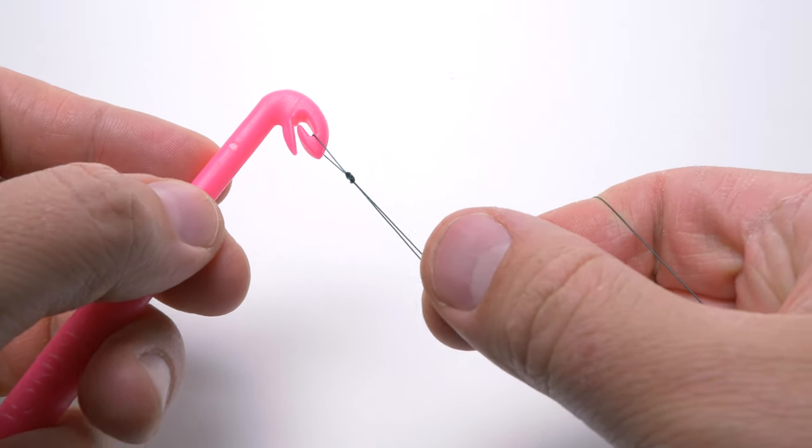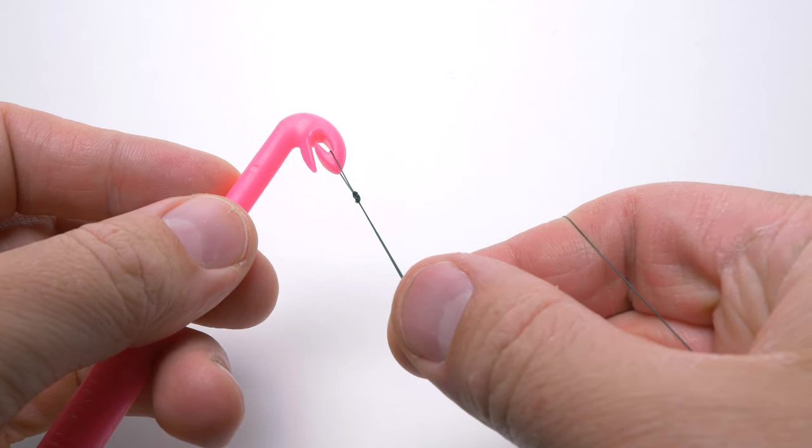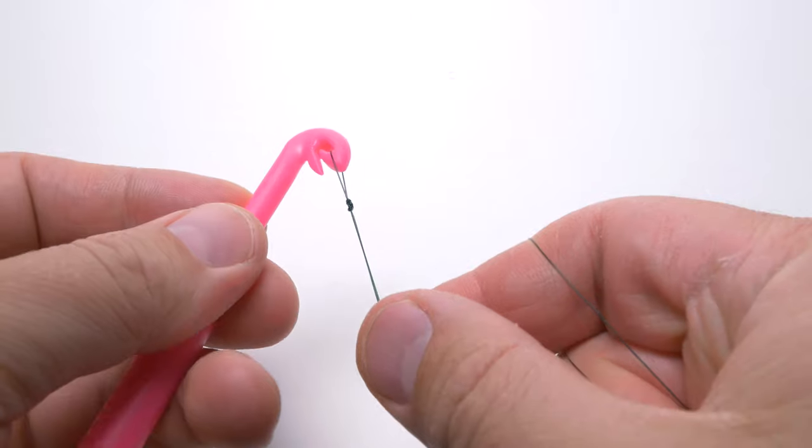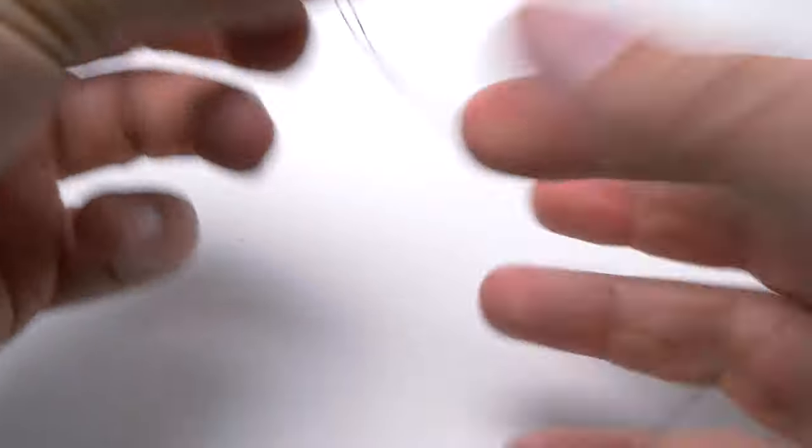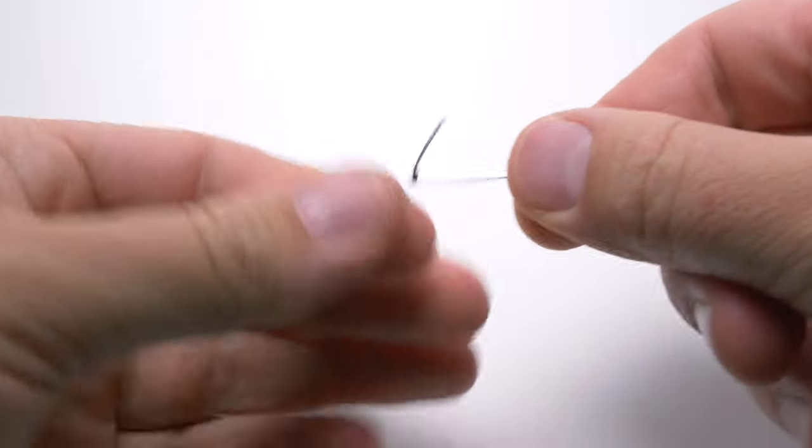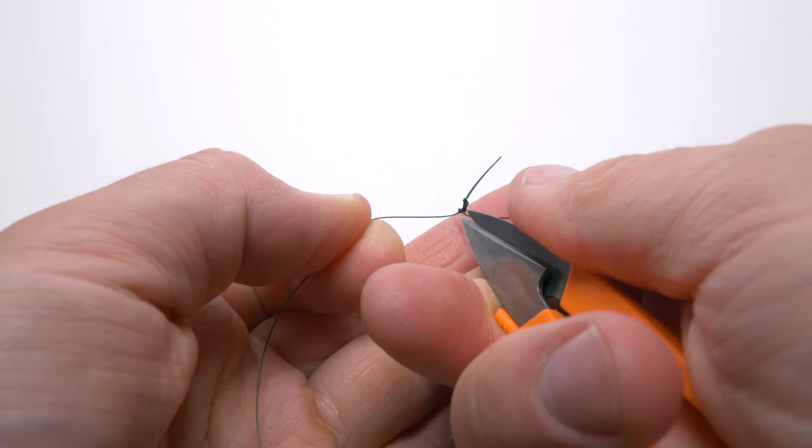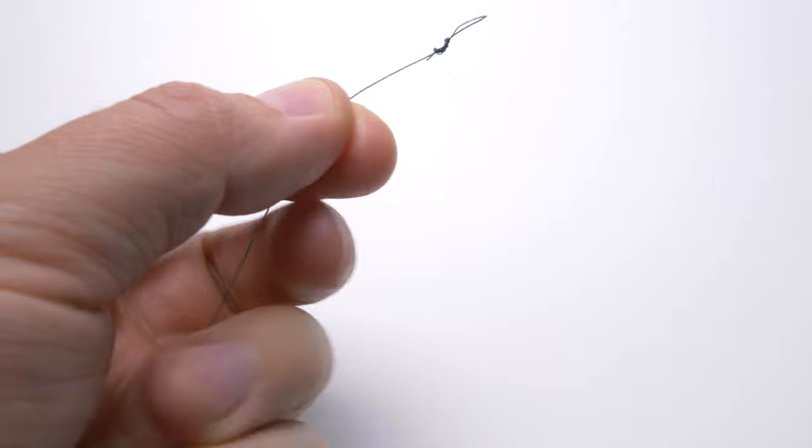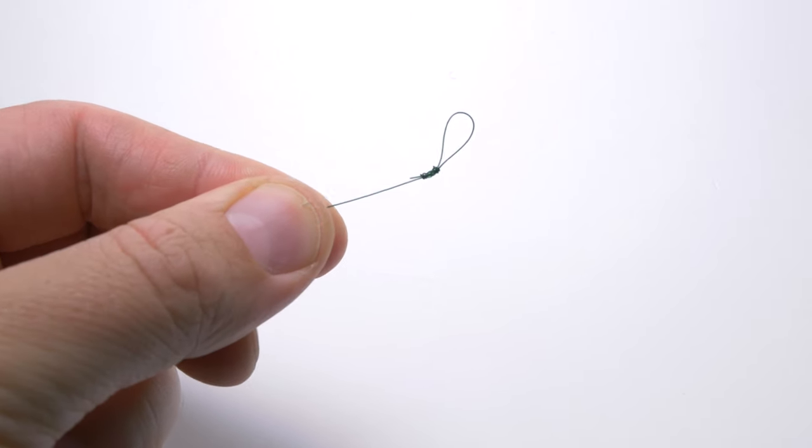Then I will remove the loop from the tool's jaws and trim off the tag end. Then I will remove the loop from the top line. That's the loop completed.